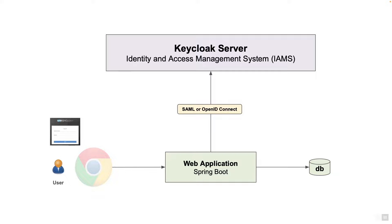This functionality is usually required when we have to write applications that can be accessed by users in multiple identity providers, maybe different organizations. As developers, we mostly deal with a single identity provider. When we write our enterprise applications, we integrate with the enterprise identity and access management system — I will call this IAM from here on. Examples of these IAM software are Microsoft ADFS, Okta, Keycloak, etc.